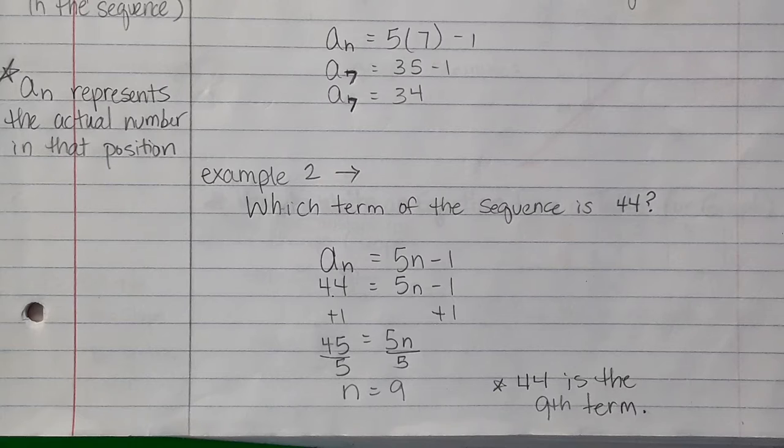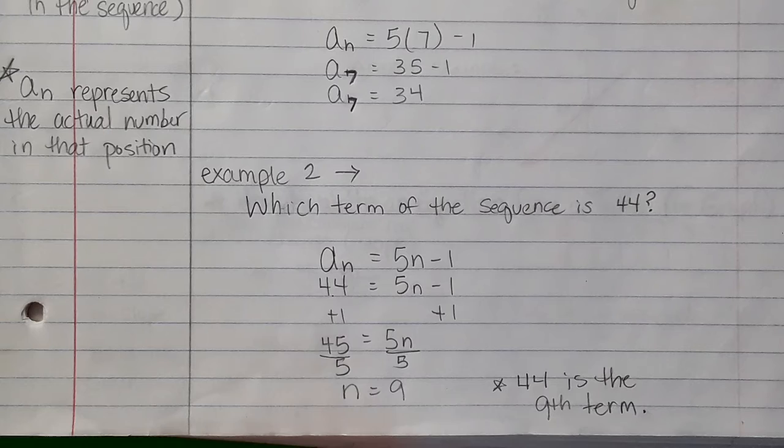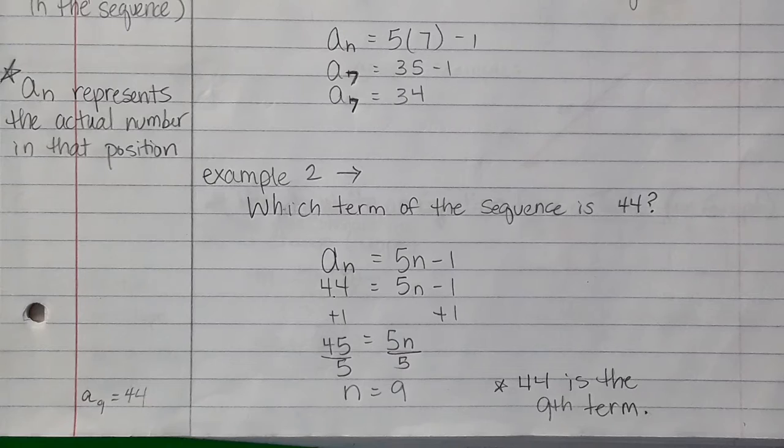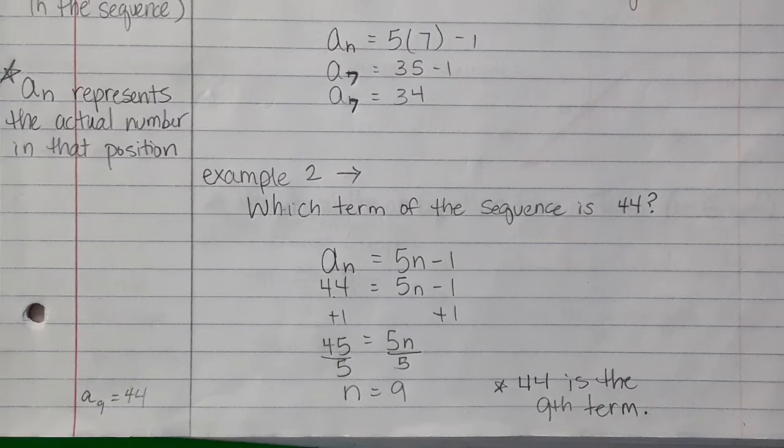In other words, the 9th number in the sequence is 44. If I wanted to, I could write this as a sub 9 equals 44, because that tells me the 9th number in the sequence is 44.